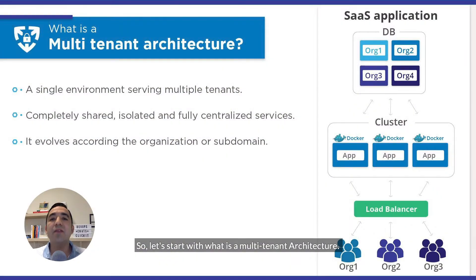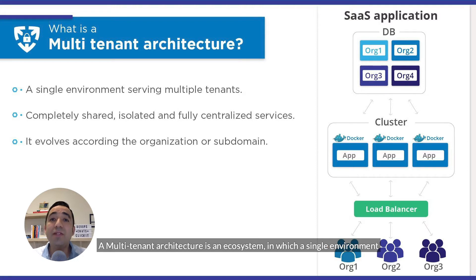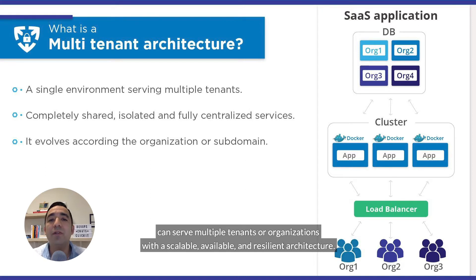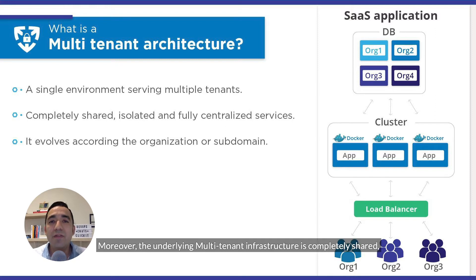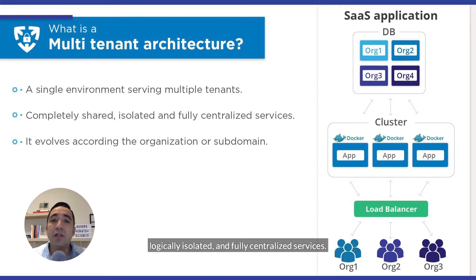So let's start with what is multi-tenant architecture. A multi-tenant architecture is an ecosystem in which a single environment can serve multiple tenants or organizations with a scalable, available, and resilient architecture. Moreover, the underlying multi-tenant infrastructure is completely shared, logically isolated, and fully centralized services.